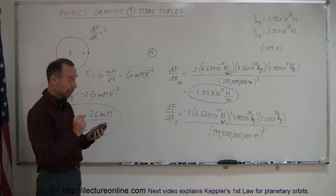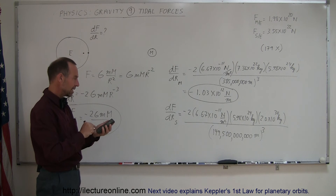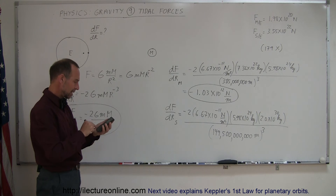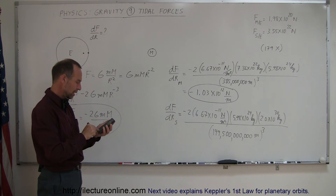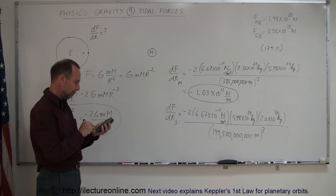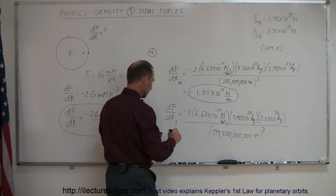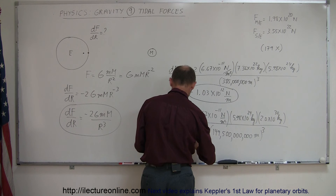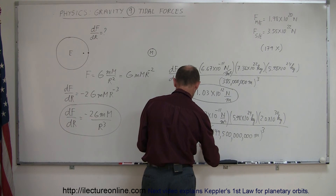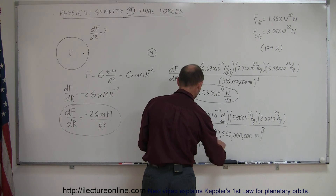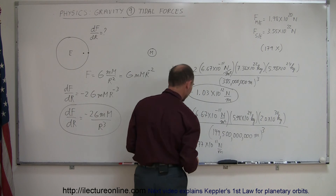Let's see what that number is. So: 2 times 6.67e-11 times 5.98e24 times 2e30 divided by 149.5e9 cubed equals — don't forget the minus — and that number is minus 4.77 times 10 to the 11th newtons per meter.